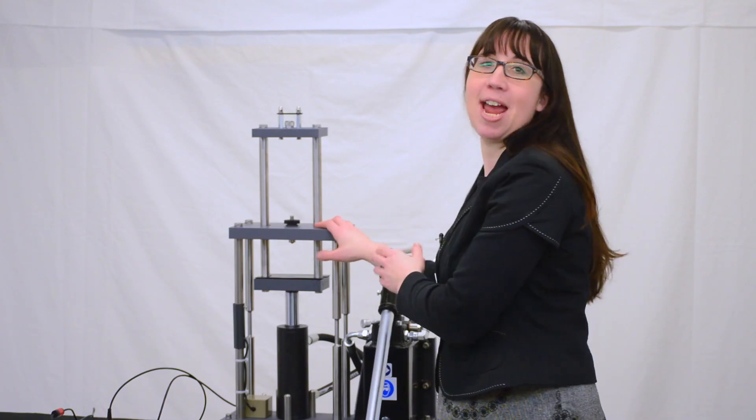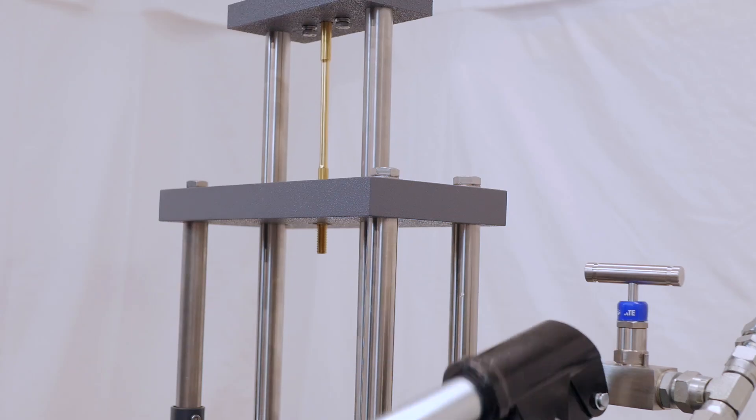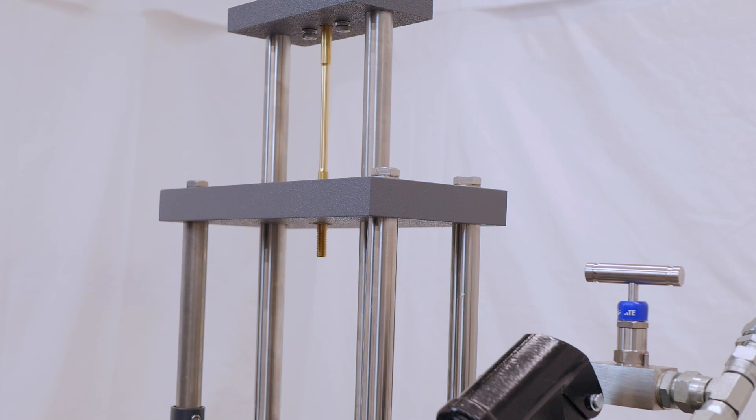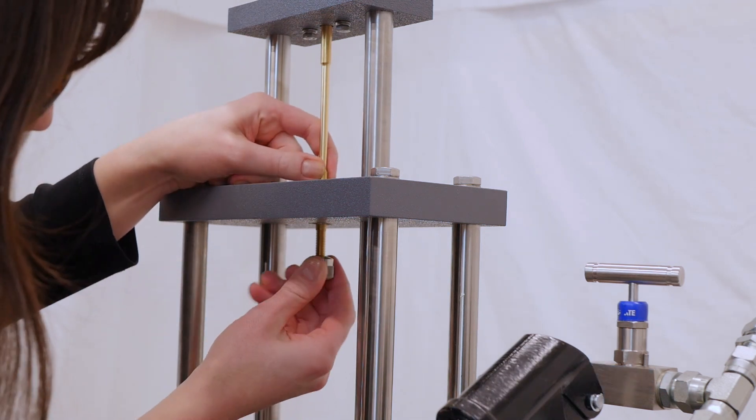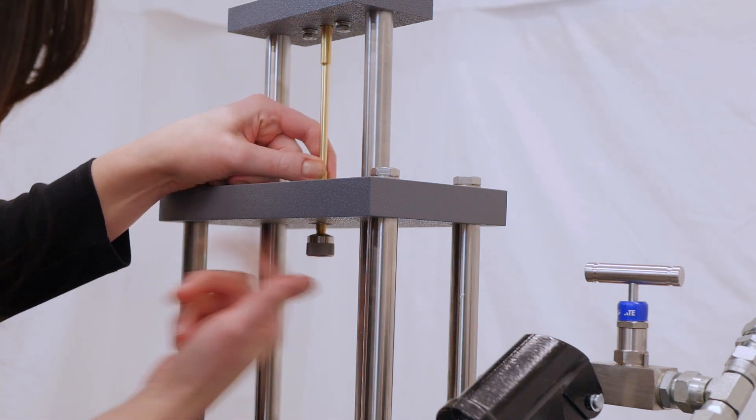This upper area is for tensile testing. Students can test specimens to the point of destruction to establish the ultimate tensile stress but prior to the breaking point they can also establish the modulus of elasticity, yield stress and elongation percentage. The specimen is fitted by dropping it down through the hole here and fixed in place with a nut at the top and bottom.